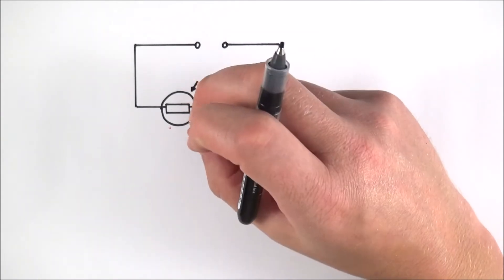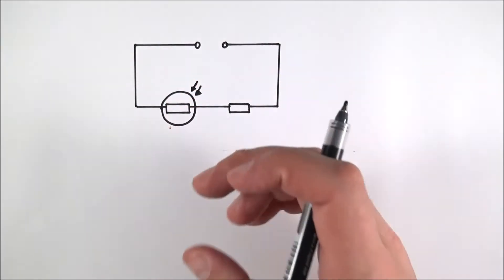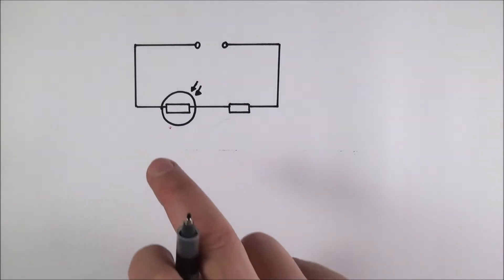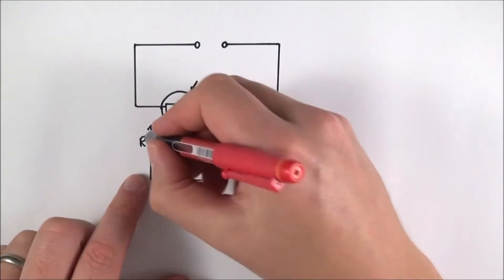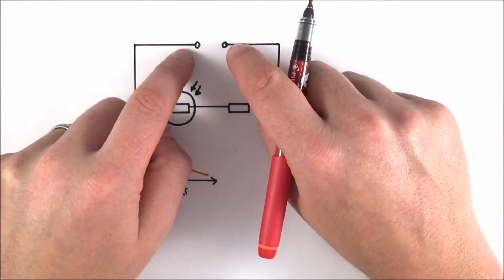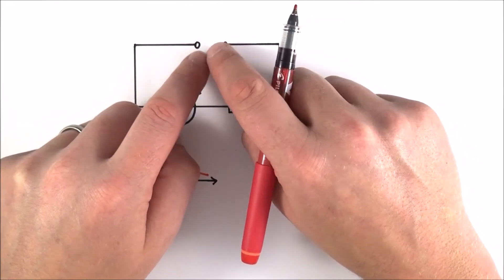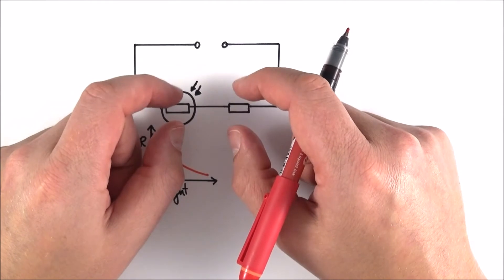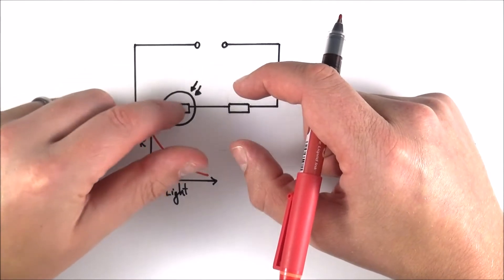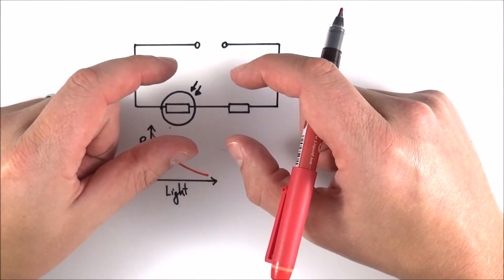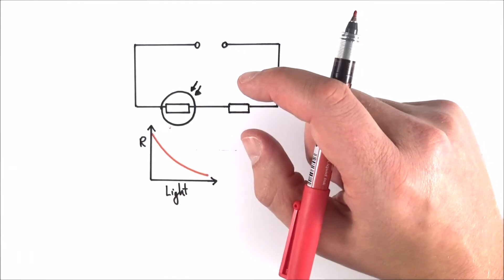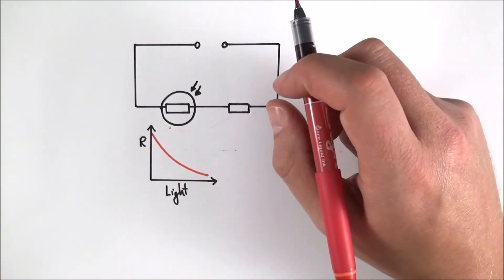Something which is non-ohmic means that it changes its resistance. If you have an LDR, its resistance changes with different light levels. A thermistor can be used in its place and that changes with temperature. You should remember a graph that looks like this — as light intensity increases, the resistance of the LDR decreases. That means with a fixed potential difference across the terminals, the share of that voltage going to each component changes. As light intensity increases, resistance goes down, the LDR takes less of a share, and the potential difference across the fixed resistor should increase.